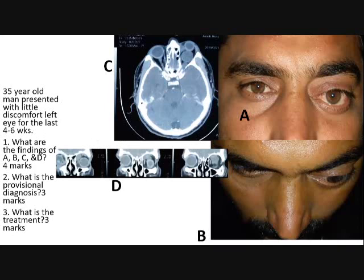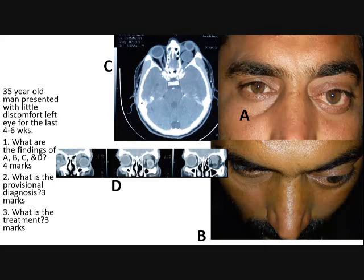There is bulging of the left eye. There is protrusion of the corneal apex beyond the superior orbital rim. There is a mass behind the globe — a retrobulbar mass. Excellent. And in another image, there is a mass on the superior nasal aspect of the globe.